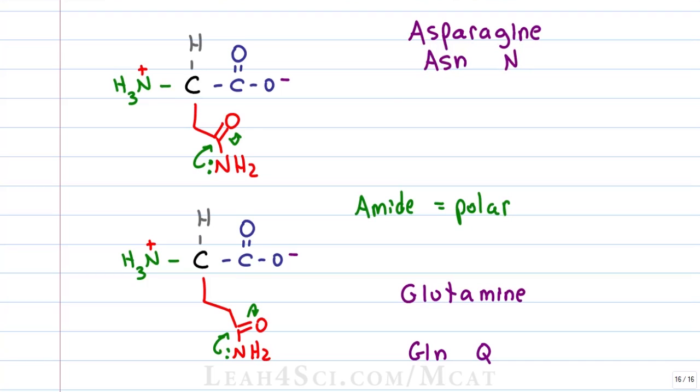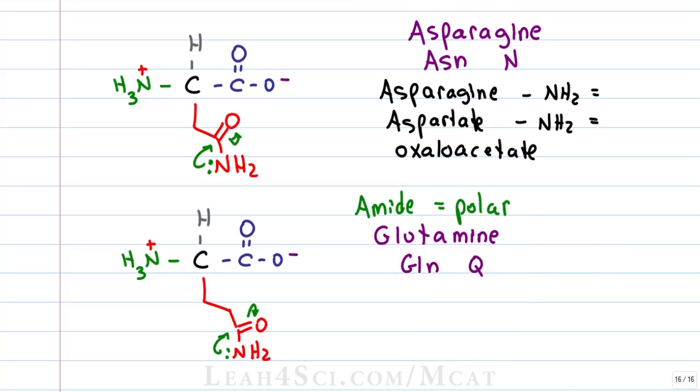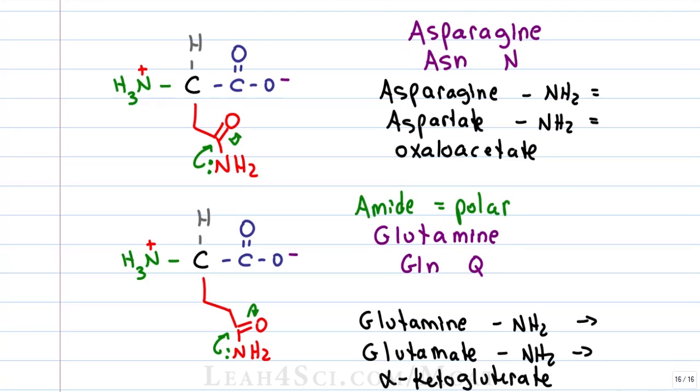The nitrogen groups can be removed through transamination. For asparagine, if we replace it with an oxygen, we get aspartate, which is an acidic amino acid. If we remove the second nitrogen group, we get oxaloacetate, which is an intermediate in the citric acid cycle. Glutamine has one more carbon, but the transamination works the same way. Swap out the side chain for an oxygen and you get glutamate, an acidic amino acid. Remove the nitrogen in the backbone and you get alpha-ketoglutarate, which is another intermediate in the citric acid cycle. You'll see these reactions in more detail when you study amino acid metabolism.